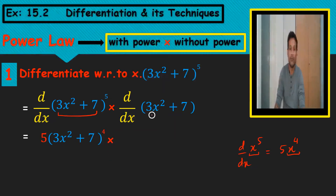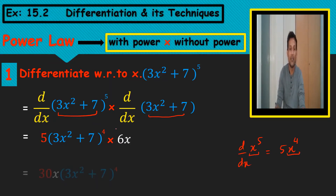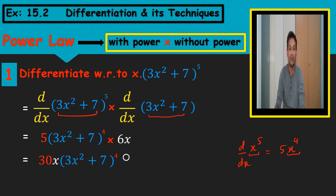Then we multiply by the simple differentiation of the inside: 3 times 2 is 6x, plus zero is only 6x. After simplification, 5 times 6 gives us the final answer: 30x times (3x squared plus 7) whole power 4.